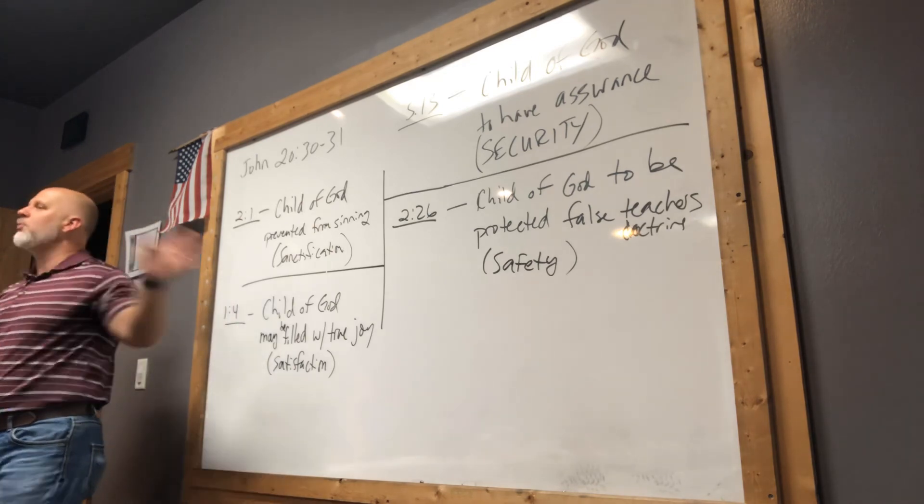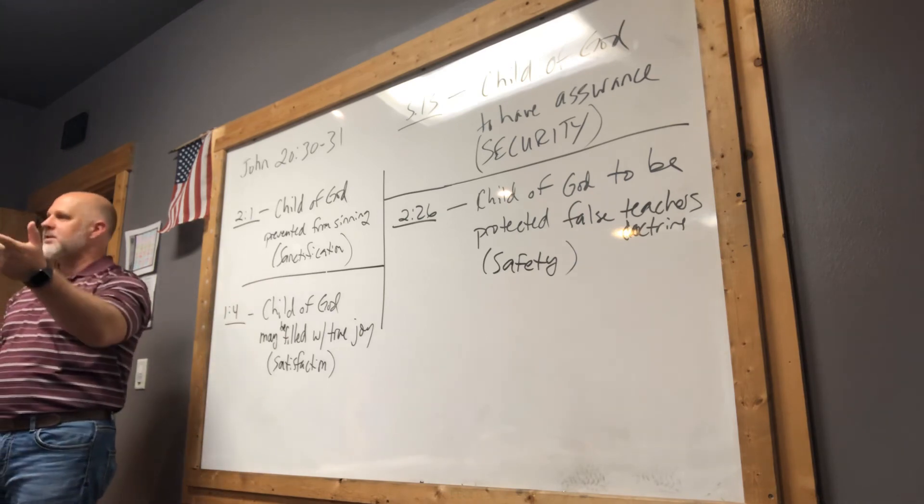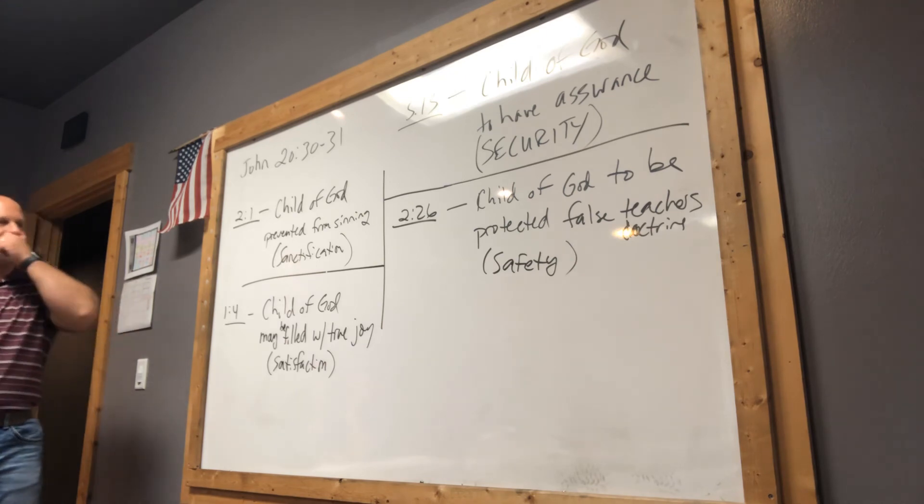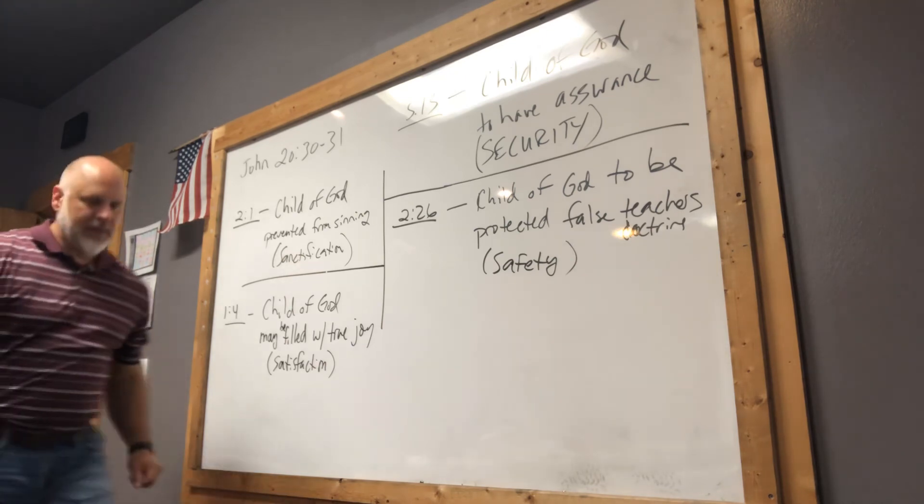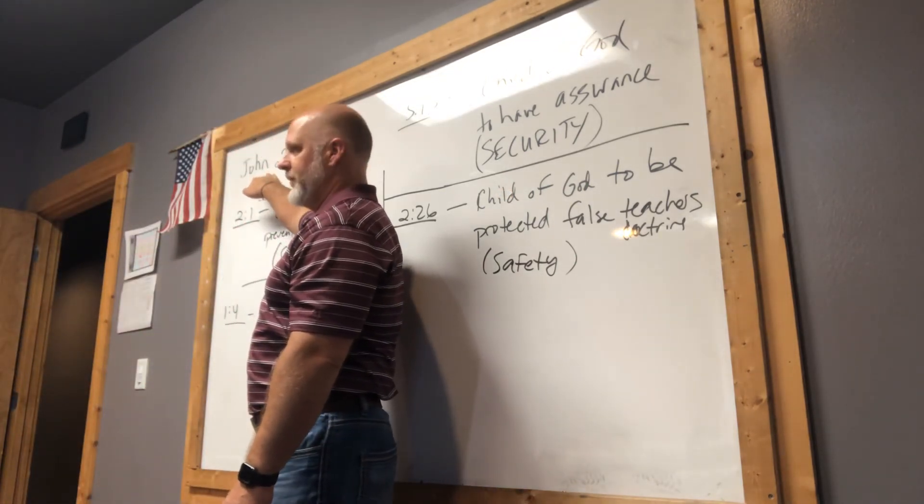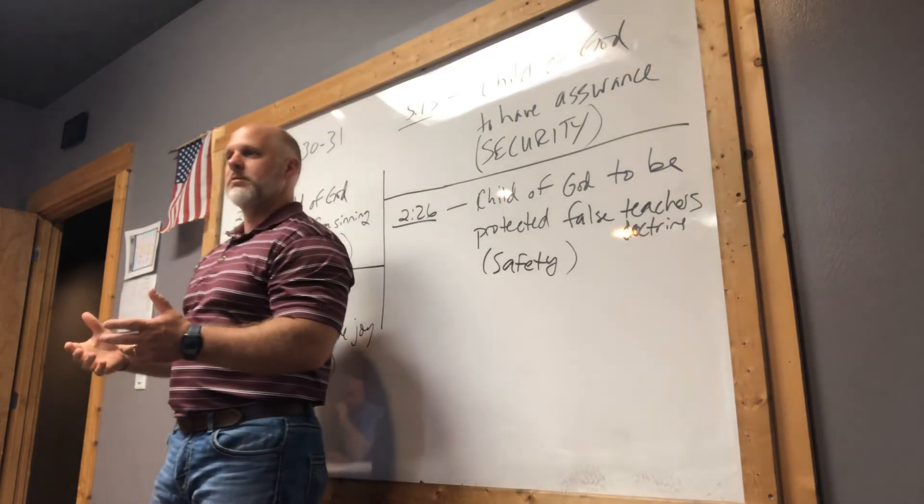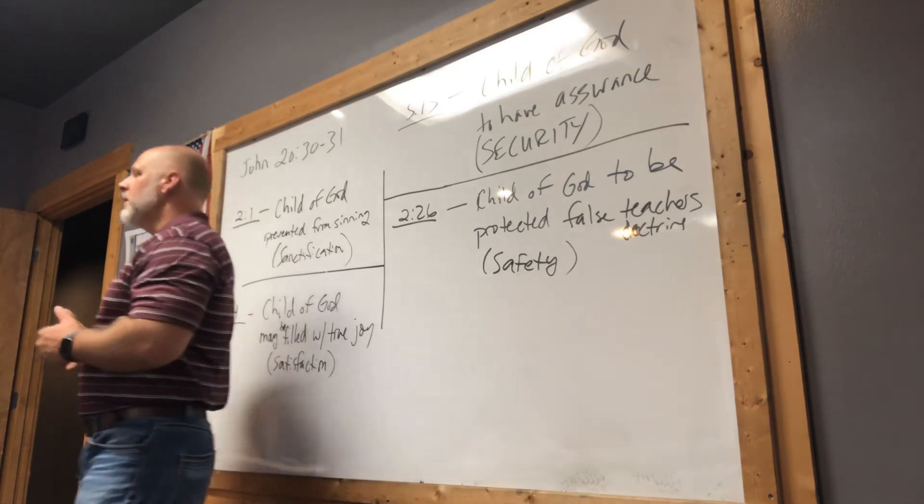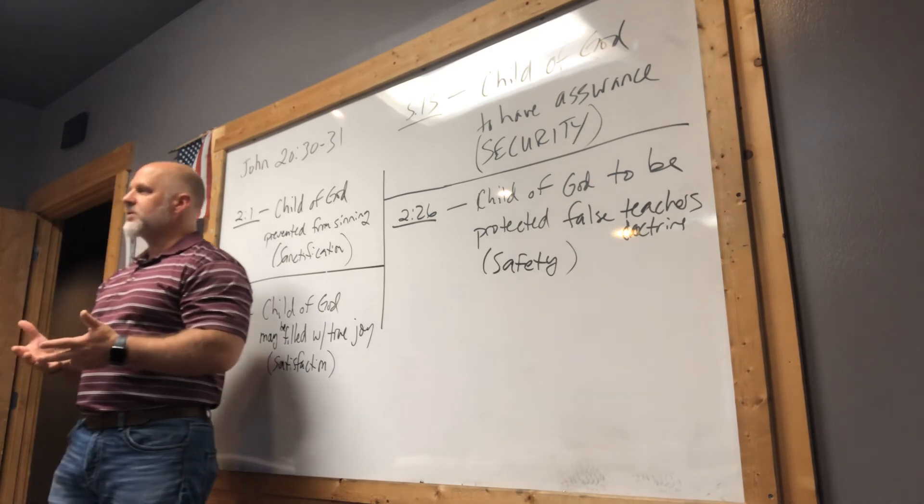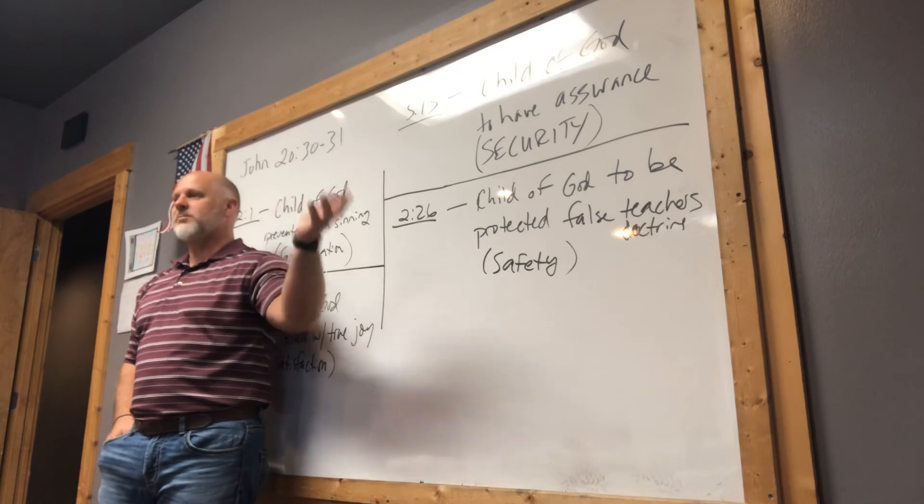And so here's what I would encourage. Maybe start a sheet of paper that would have these as column headings, and whenever you read a section of 1 John, ask yourself, which of these is he talking about? Or you could just take these words, sanctification, satisfaction, security, safety, and then just put them over headings in the text. Because if this is the reason why he writes it, then the content is going to have to fall in these categories.